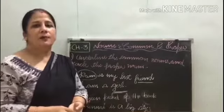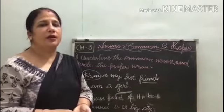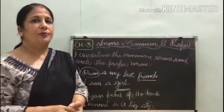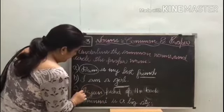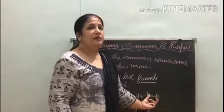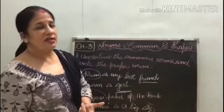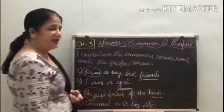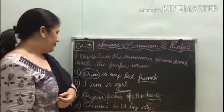Next sentence: Arjun picked up the book. What is the proper name? Arjun — Arjun is the particular name, the special name. So Arjun is a proper noun. And 'book' — what is the common name? Common noun. Next sentence: Chennai is a big city. Chennai is what? Kisi bhi place ka particular name — proper name. So Chennai is a proper noun.